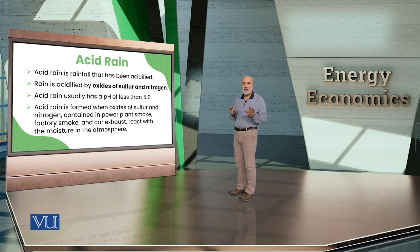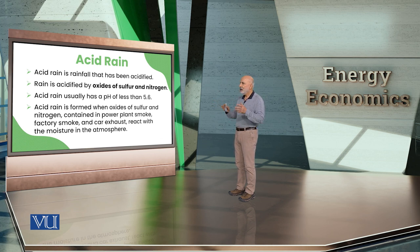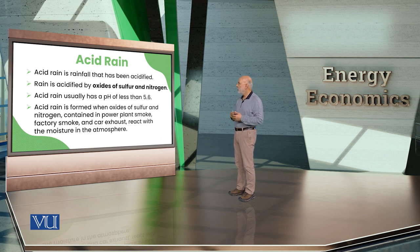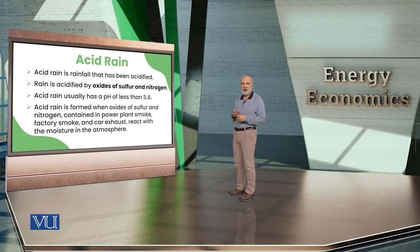Now let me tell you about the sources of nitrous oxide and sulfur dioxide. The biggest source is cars. Where there are fossil fuels — cars, power generation, steel mills — these are all the sources. There are also volcanoes, which we have no control over. But that sulfur dioxide also contributes to what we call acid rain.